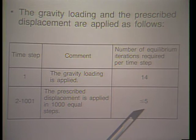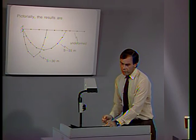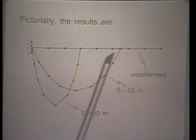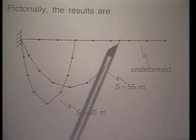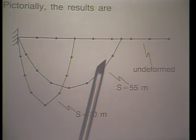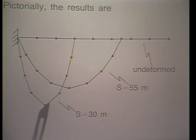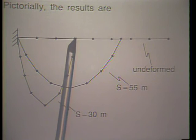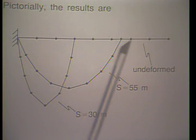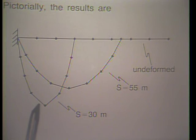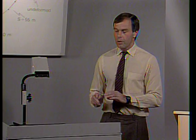Pictorially, the results show the undeformed cable, followed by the configuration with s equal to 55 meters, and then with s equal to 30 meters. Bringing the point in further would require a finer discretization to properly model the curvature. These results are quite acceptable up to s equal to 30 meters with this coarse discretization. Thank you very much for your attention.